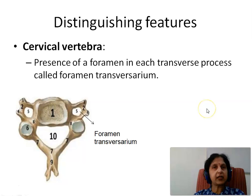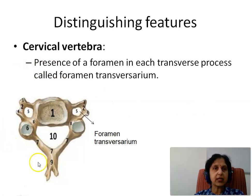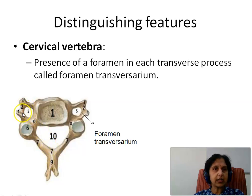Now that we have seen the different parts of a vertebra, let us see how we differentiate between the cervical, thoracic and the lumbar vertebrae. The cervical vertebra has a characteristic feature: the presence of a foramen in each transverse process called the foramen transversarium. What we see here is the superior view of a cervical vertebra showing the body, the transverse process, the pedicle, the laminae and the spinous process, with the foramen transversarium present in the transverse process as the identifying characteristic feature.